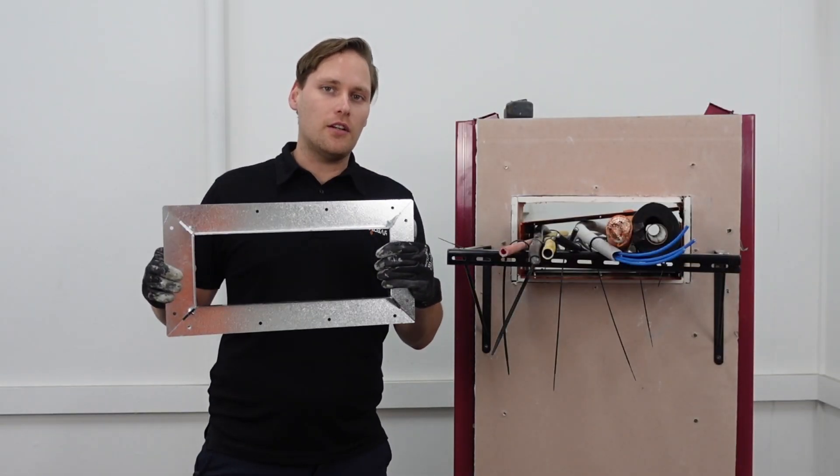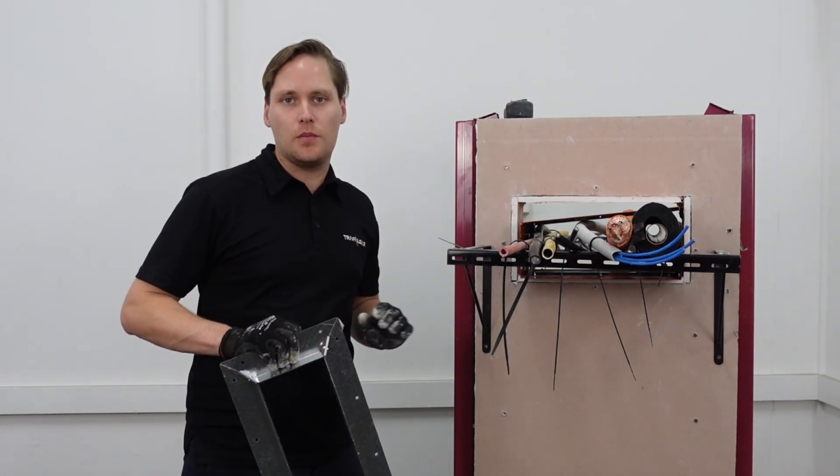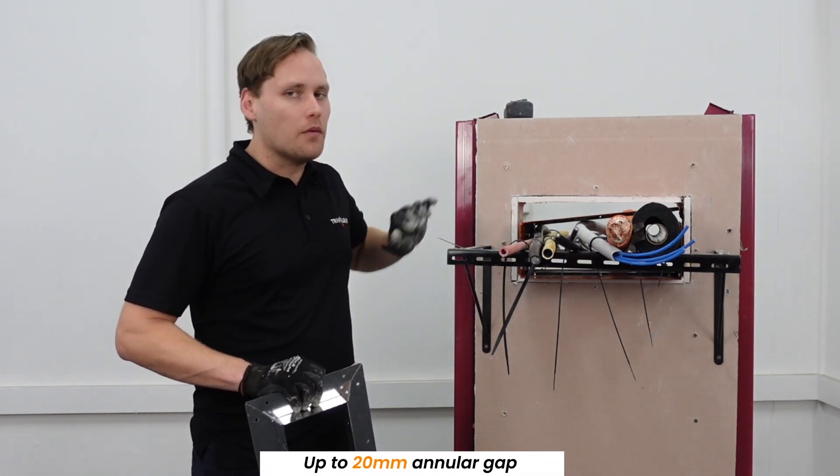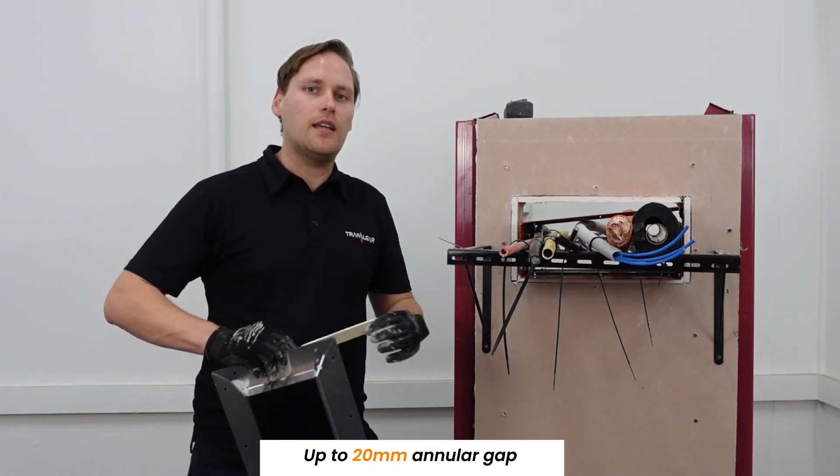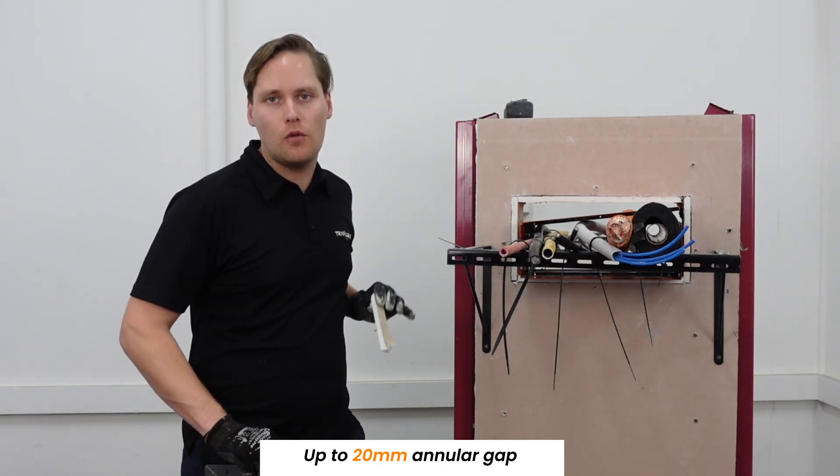Now before we put our flanges on, we are going to need to put some sealant in the annular gaps around the Superstopper. Now we can go up to a maximum of 20mm gaps. So what I'm going to do is take a little bit of fire-rated plasterboard and use that to chalk up the box and center it in the wall.